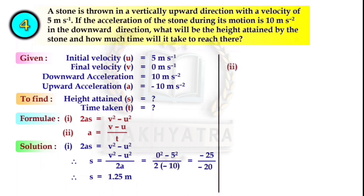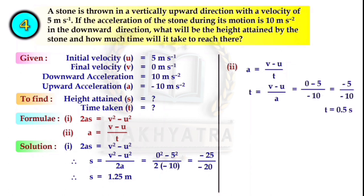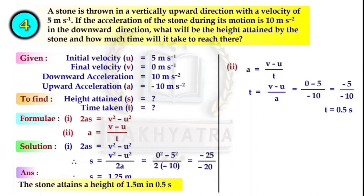For finding the time, using a = (v - u)/t, rearranged: T = (v - u)/a = (0 - 5)/(-10) = 0.5 seconds. The stone attains a height of 1.25 meter in 0.5 seconds.